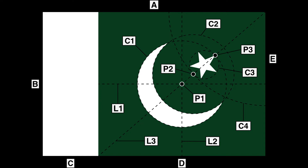Draw a diagonal line from the top right-hand corner to the bottom left corner of the green portion. On this diagonal, establish two points, P1 and P2. P1 is positioned at the center of the green portion, and P2 at the intersection of the diagonal line and an arc C4, created from the top right-hand corner equal to 13/20ths of the flag's height E. With the center at point P1 and a radius of 3/10ths of the flag's height, this describes the first circle C1; and with the center at point P2 and a radius of 11/40ths of the height of the flag, this describes a second circle C2. The enclosures made by these two circles form the crescent.